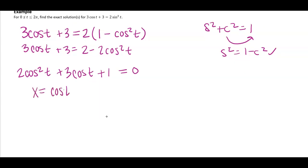Let's let x equal cosine t. Let's do that first. So we get 2x squared plus 3x plus 1.